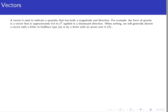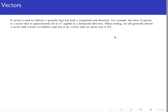When we write vectors, we typically denote them with letters, either with boldface type or a letter with an arrow over it. Usually when you see things typed, you see boldface type. When written on a chalkboard or paper, since it's hard to write in boldface, you usually use an arrow over the top.